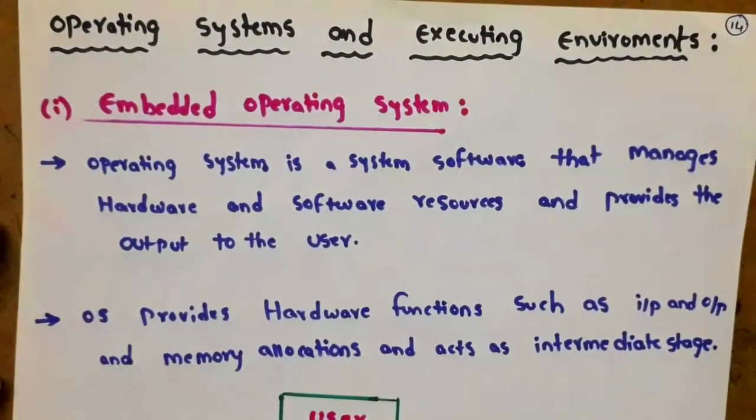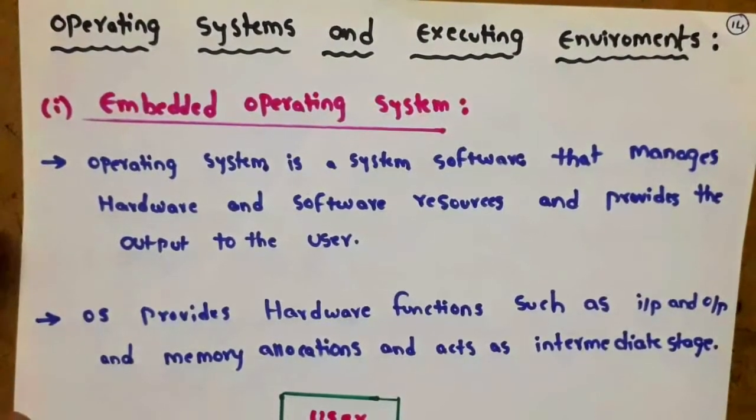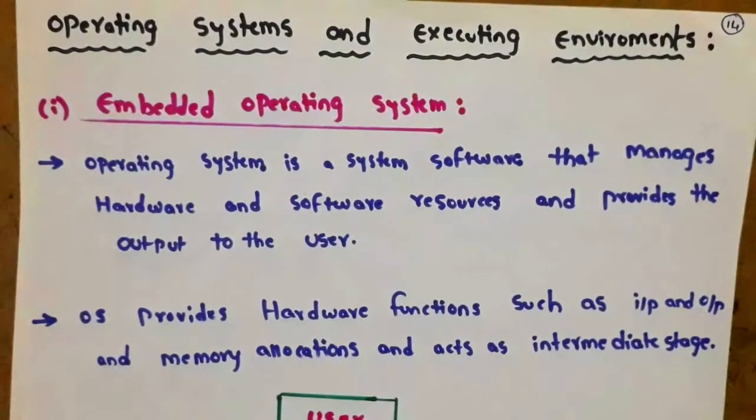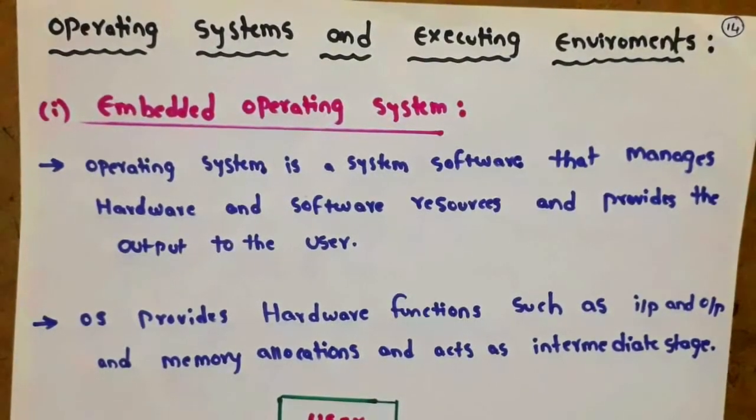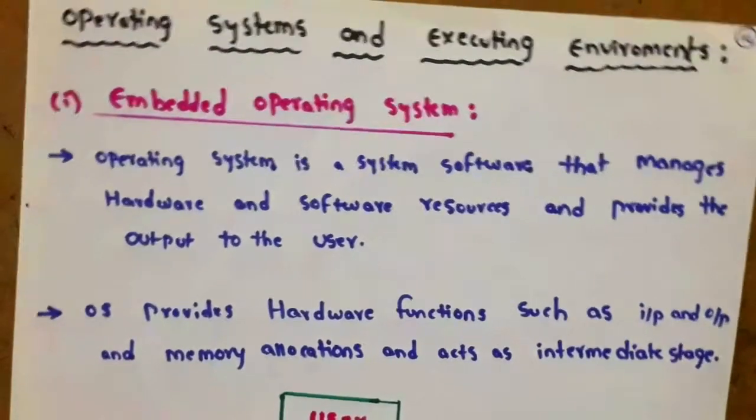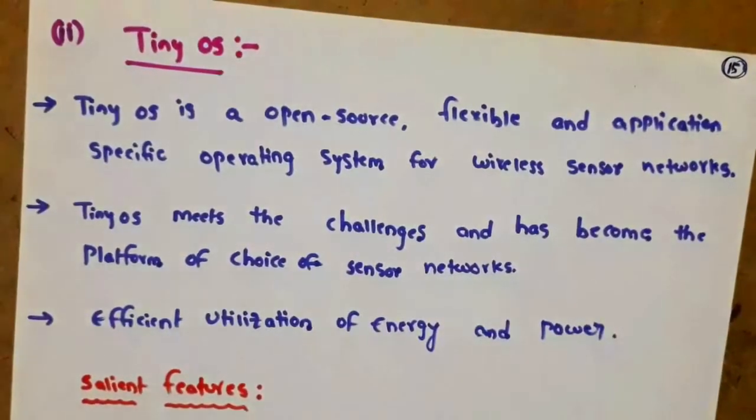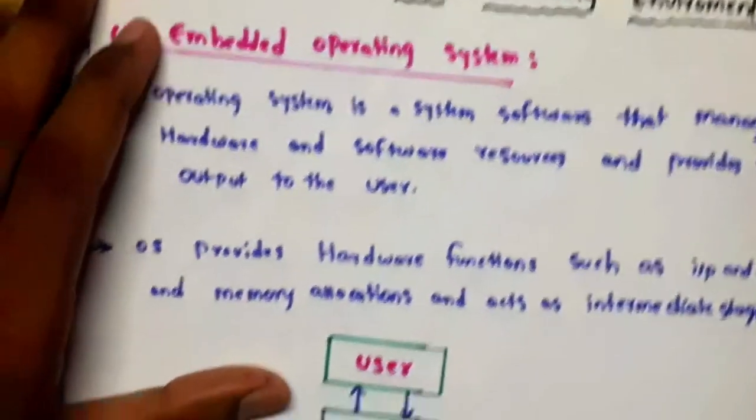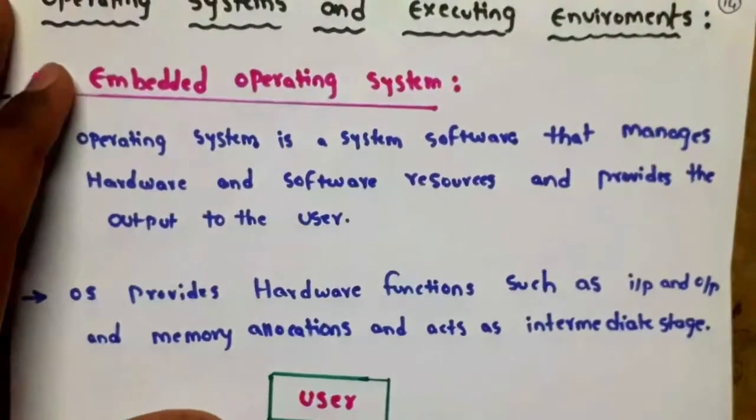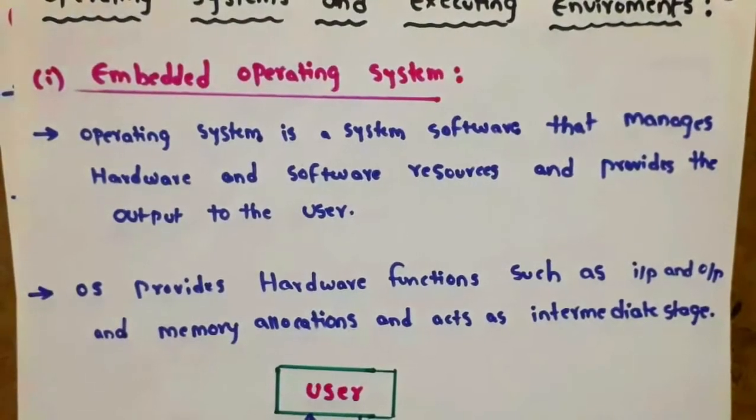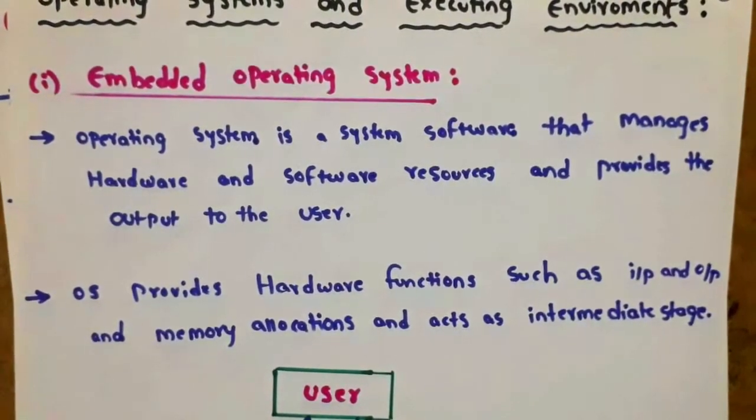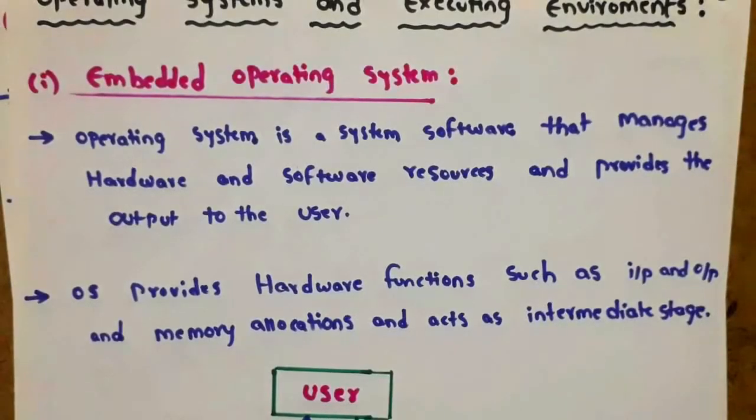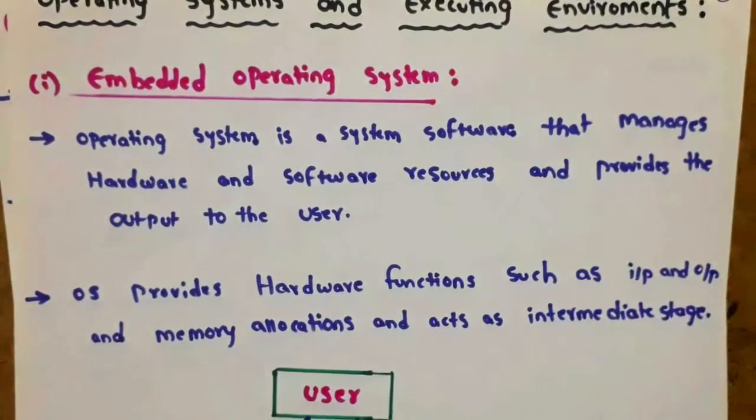The next topic is operating systems and execution environments. We have two operating systems: embedded operating systems and TINI operating system. First, let's look at the embedded operating system. An operating system is an interface between the user and computer system that manages hardware and software resources and provides output to the user.